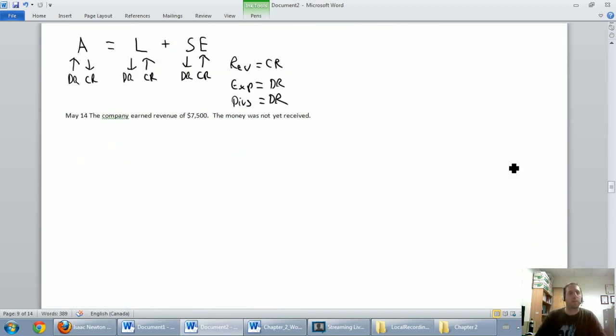Let's move on. May 14th, the company earned revenue of $7,500. The money was not yet received. So in answer to the question I'm always asking, did money change hands? The answer is no. There's no cash involved here. Well, I can deal with the first part of this pretty easily. We earned revenue. Revenues always take a credit. So we're going to credit revenue. We're going to credit repair revenue for $7,500.